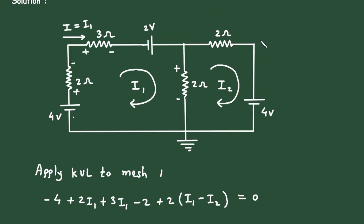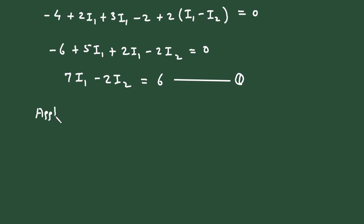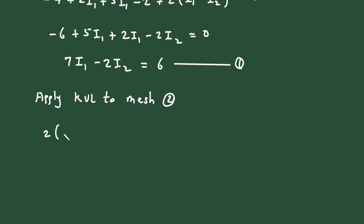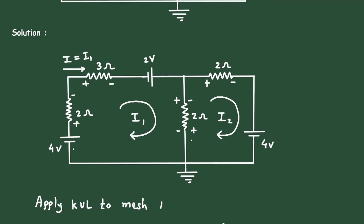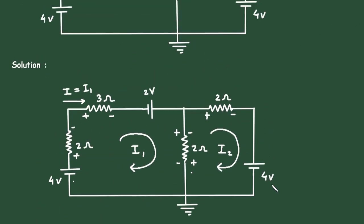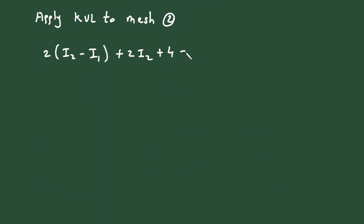Now we will apply KVL to mesh number 2. KVL stands for Kirchhoff's voltage law. According to the direction of current I2, we assign the signs and start from this point: 2 times (I2 minus I1), plus 2I2, plus 4, equals 0.